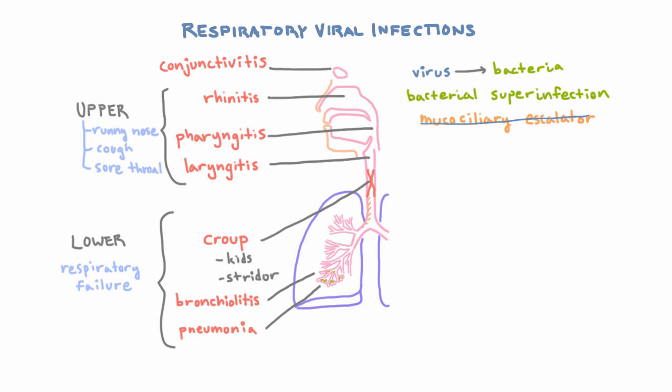Now let's talk about how you make a diagnosis. The first approach is clinically — based on the symptoms of all the conditions we've described. But how do you know which virus it is? If it's an upper respiratory tract infection and just a mild cold, you don't really need to know, especially because we don't have treatments for the vast majority of them. But if it's a lower respiratory tract infection, especially in someone hospitalized, very young, or immunocompromised, it's a lot more serious. In that case, you want to know exactly what virus is causing it, so you know what isolation precautions to use.